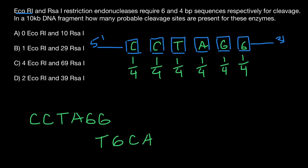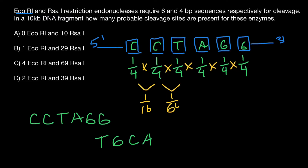Now we multiply all these independent probabilities to find the probability that a random six-base stretch on the 10,000 base pair double-stranded DNA fragment matches the specific recognition sequence. One quarter times one quarter is 1/16; times one quarter is 1/64; times one quarter is 1/256; times one quarter is 1/1024; and times one quarter is 1/4096.